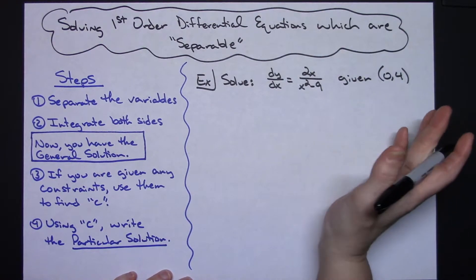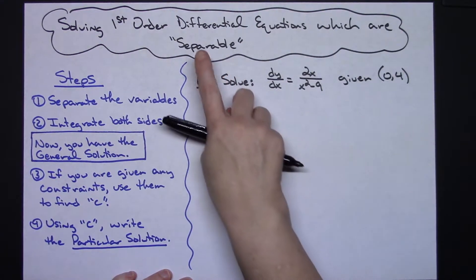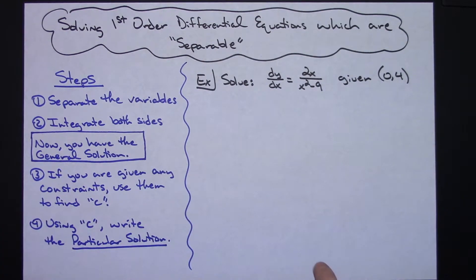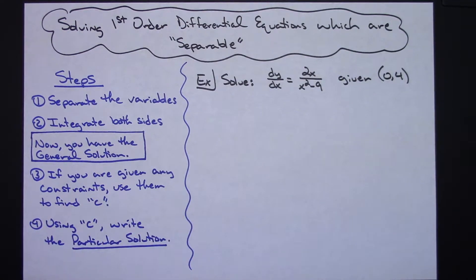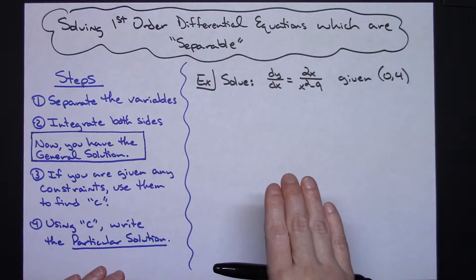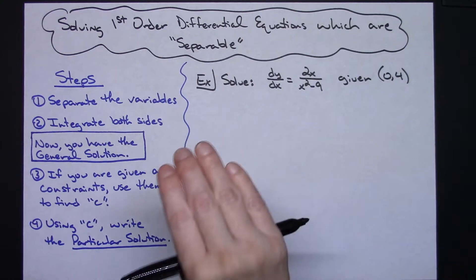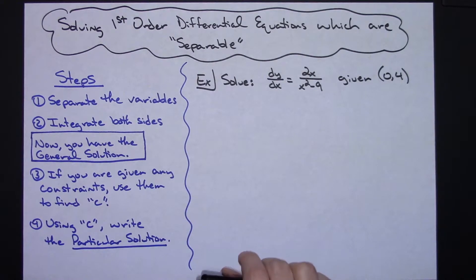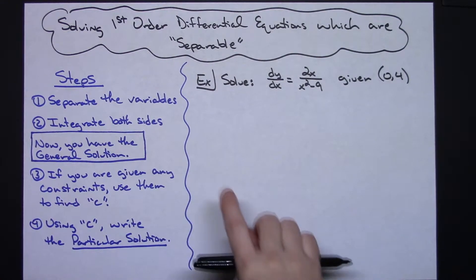I'm going to work out two examples. Each of the equations are separable, which means that it's easy to separate the variables and put all the y's on one side and put all the x's on the other side, and then it makes it a relatively simple procedure. On the left-hand side I have steps lined out so that if you can follow these steps then you will pretty much be able to solve any type of first-order differential equation as long as you can get those variables separated.